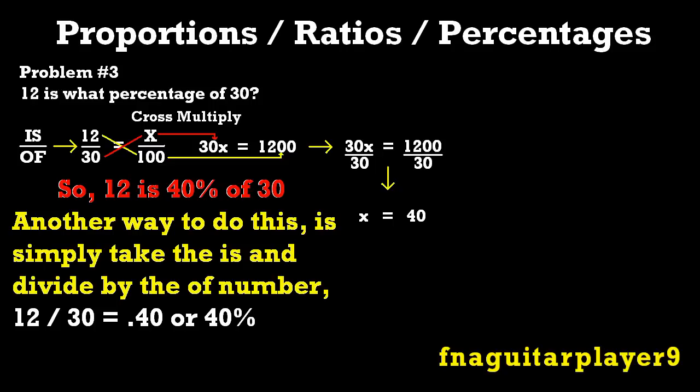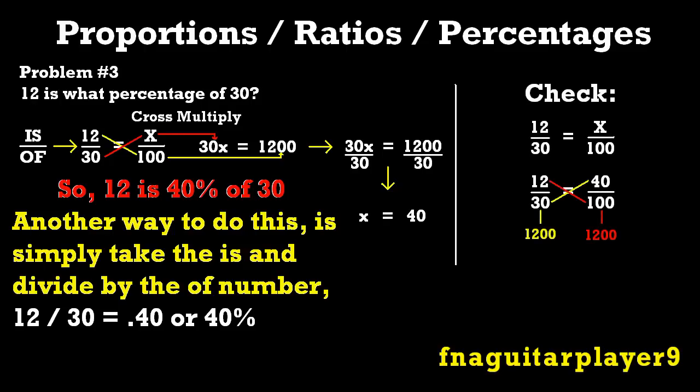Then you divide both sides by 30 to get x by itself. 1200 divided by 30 is 40. So you get x is equal to 40. So in other words, 12 is 40% of 30. Now another way to do this, which is actually a lot more simple, but the point of this video is to show you how to set up proportions. On percentages like this, it's usually easier just to take the 12 and divide it by 30. You'll get .40. Then you move your decimal point two places to the right, and that's your percentage. So we come out to 40%. And again, I'll show you here how to check it. You just fill in the x with the 40. And you're getting 1200 on both sides, so you know your answer's right.